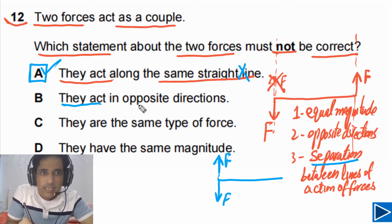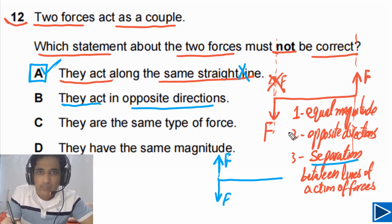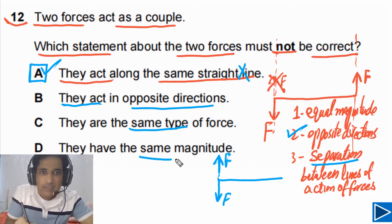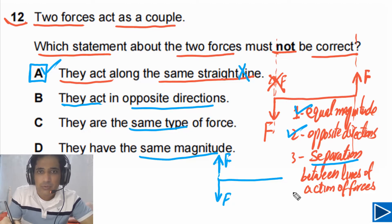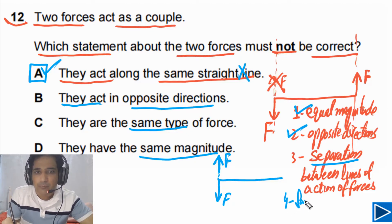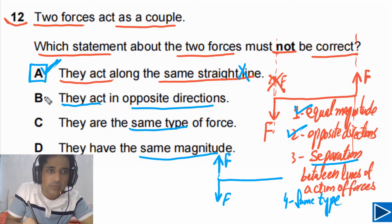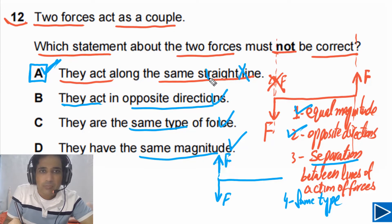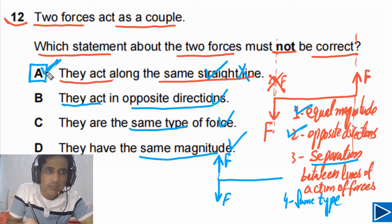Looking at the other options: they act in opposite directions — this is true for a couple. Same type of force — this is also true. They have the same magnitude — this is also true. So option B, C, and D are all true statements about a couple. But option A — acting along the same straight line — is false for a couple. So the answer for this question is A.